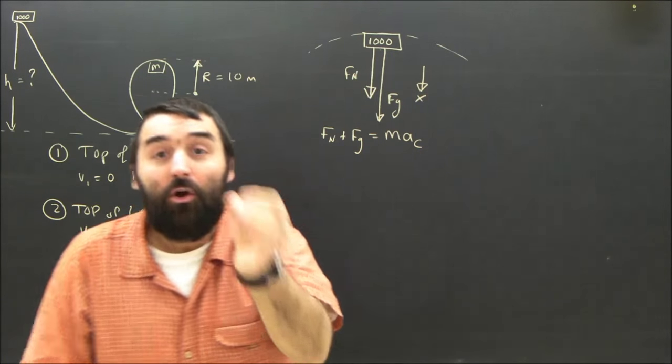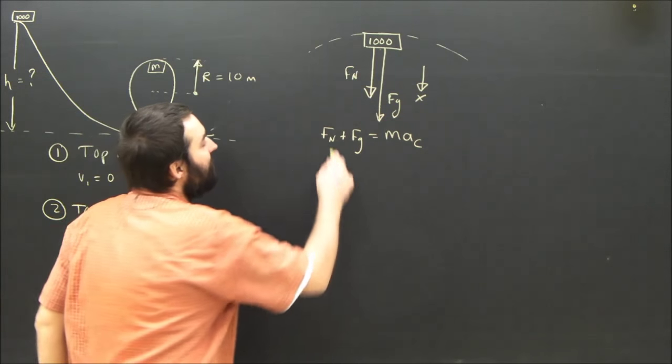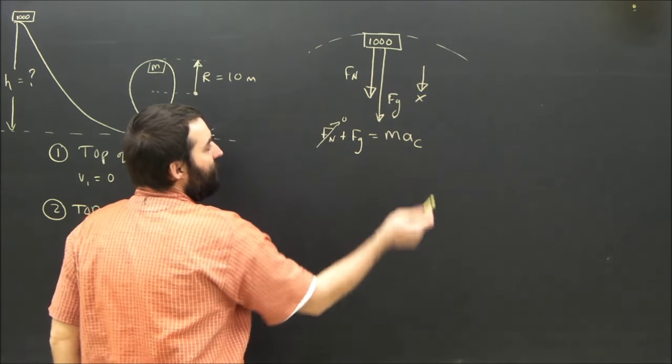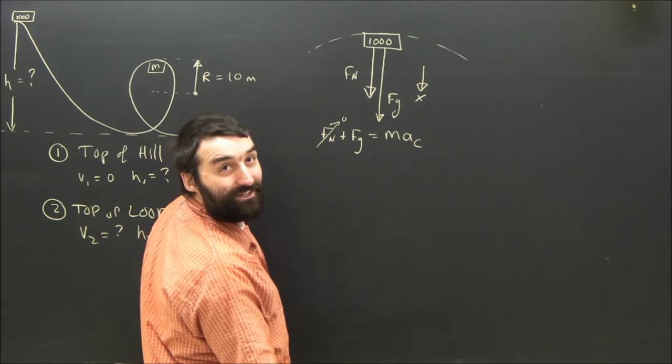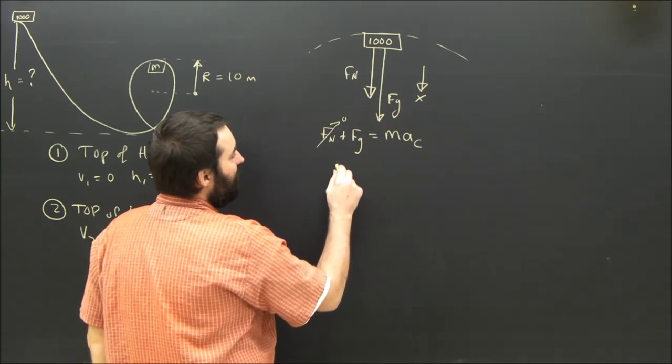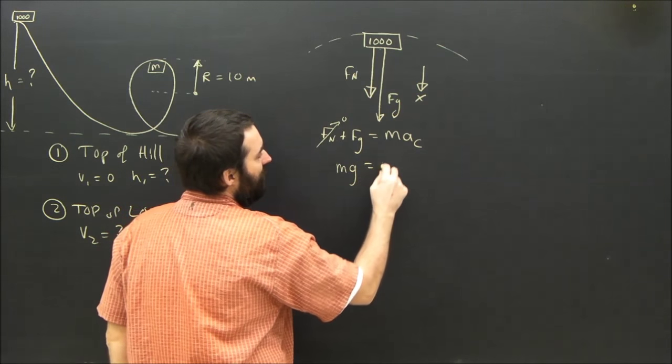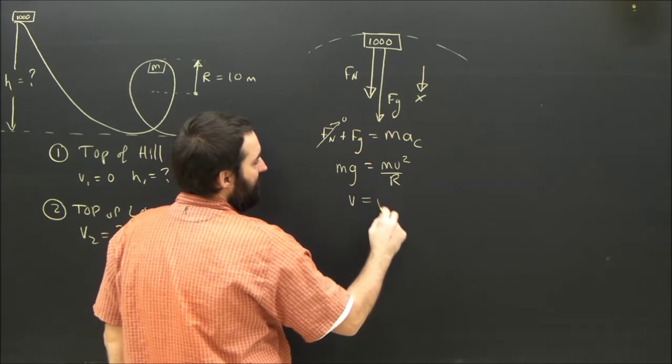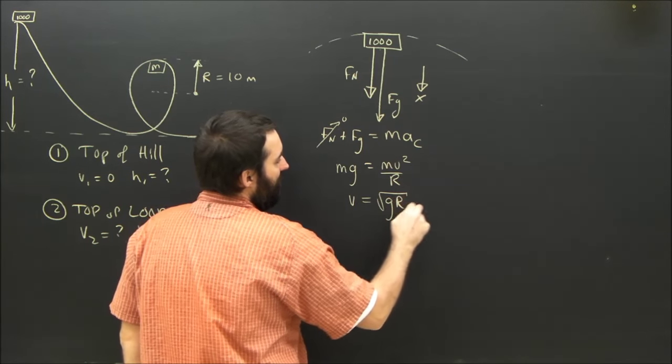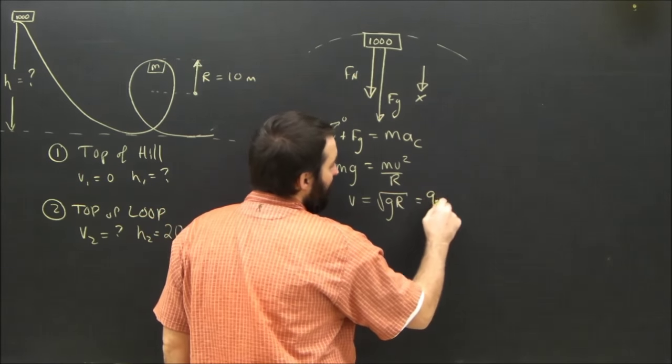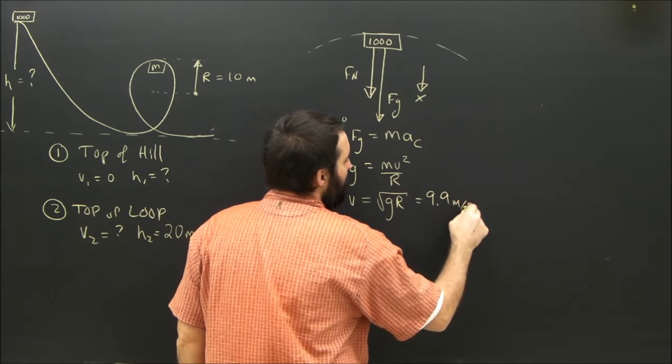Now the condition here where it just falls means that the normal force is going to become zero. And this formula, the centripetal acceleration, is v squared over r. So I can see that mg will equal mv squared over r. Rearranging that, I get the velocity equals the square root of gr, which, plugging into my calculator, gives me 9.9 meters per second.